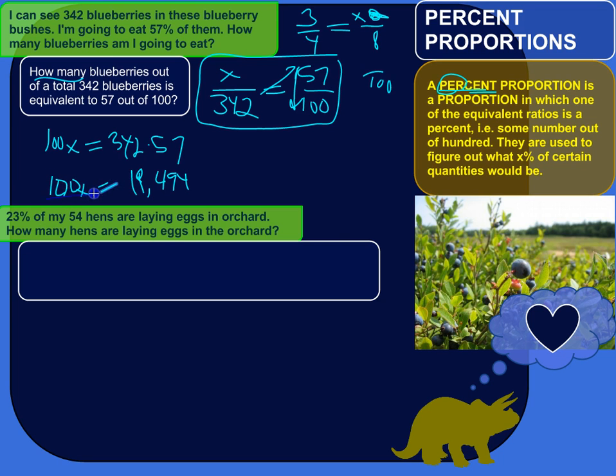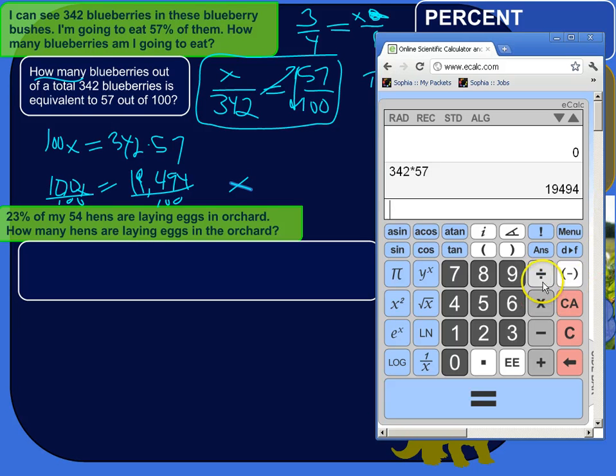So to solve for x, we divide by 100, both sides by 100. So divide by 100.